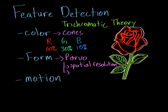One negative aspect of the parvo pathway is that it has really poor temporal resolution — meaning it struggles with motion. If a rose is thrown across the room, you can't really use the parvo pathway to track it. As soon as an object starts moving, you lose your ability to identify tiny details. You've probably noticed this: if you're driving and a Volkswagen Beetle passes by slowly, you can pick up details about the car and driver, but the spinning wheels make it impossible to make out what design the rims are.